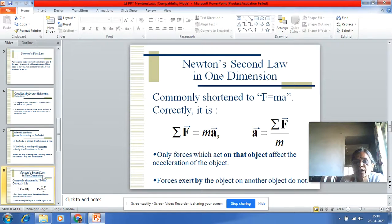Therefore, in correct form, it is written as F vector equals M times A vector, and acceleration A vector equals the summation of F vector upon M. Only the forces which act on that object affect the acceleration of the object. Forces exerted by the object on another object do not.